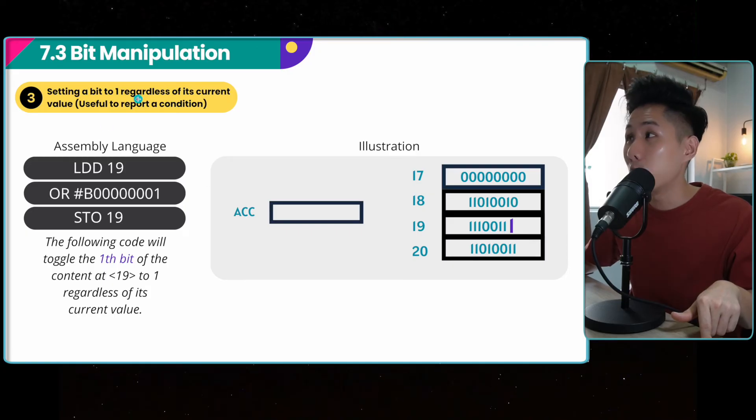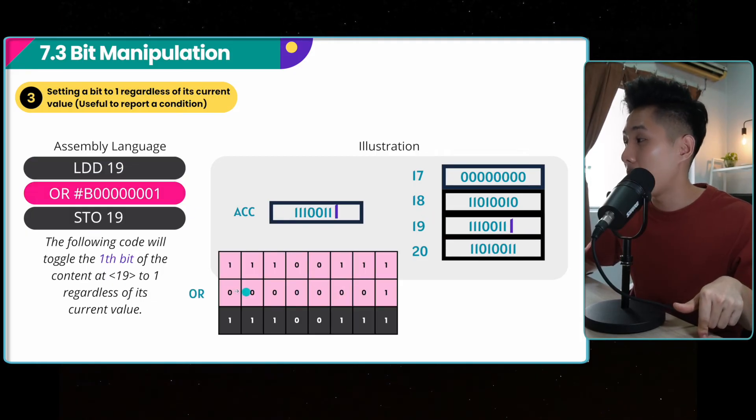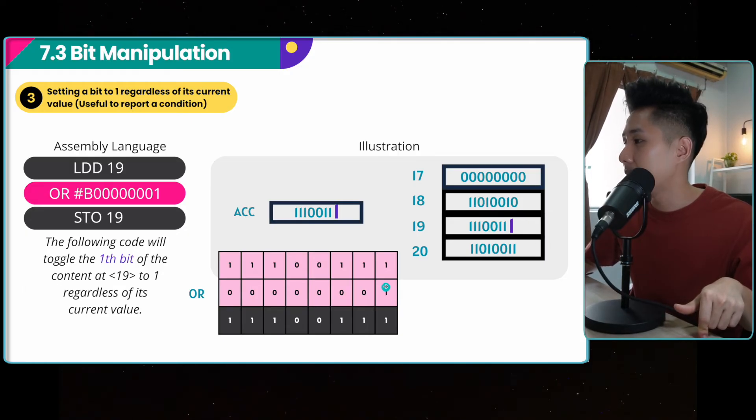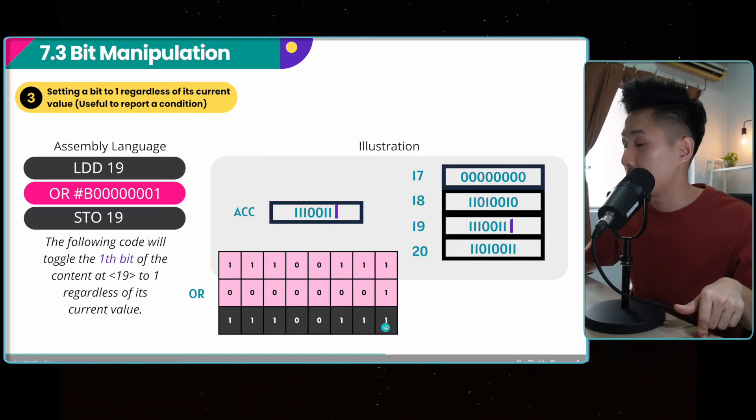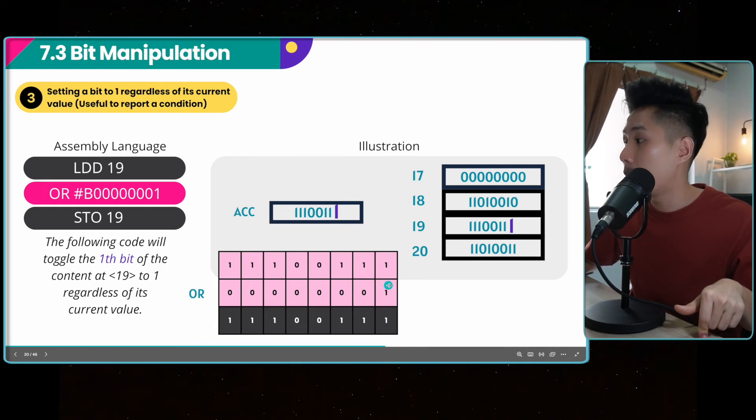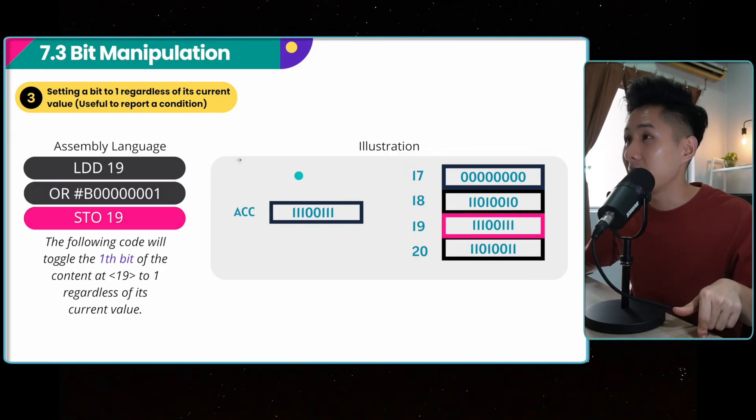Setting a bit to one regardless of its current value, useful to report a condition. So in 19, let's say I want to set this value to one, regardless of whether it's one or zero, I just want it to be one. So I will use a bitwise OR operator. Again, I only set the bit I want to change to one. So you can see that if I'm using an OR operator, if this is zero, zero OR one will still give me one. But then if it's a one, one OR one will also give me one. So by using an OR operator, I can set the value of a bit to one regardless of what value it has. So if you want to set a bit to one regardless of its current value, use an OR operator.